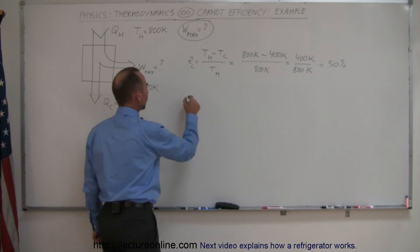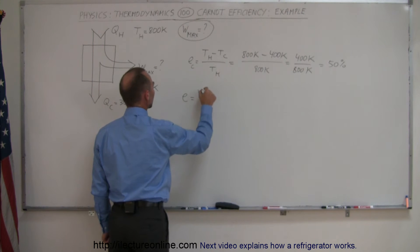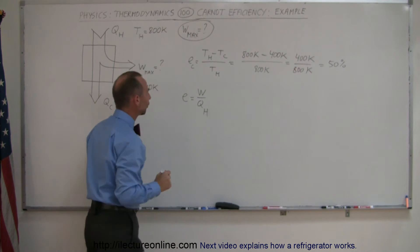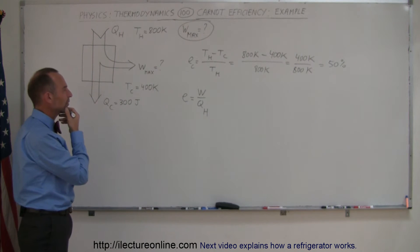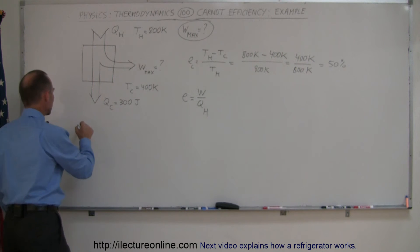We know that the efficiency is equal to the work divided by Q hot, and of course we don't know what Q hot is, we don't know what work is, but we know that work can also be expressed in terms of Q hot minus Q cold, so let's do that.